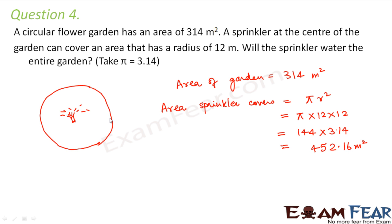Now when you look at it, the area of the garden is 314 meters. The sprinkler is located at the center, which means the sprinkler would sprinkle water equally in all directions. As per our calculation, the area that the sprinkler would cover is 452.16 meter square, which is a larger area than that of the garden.